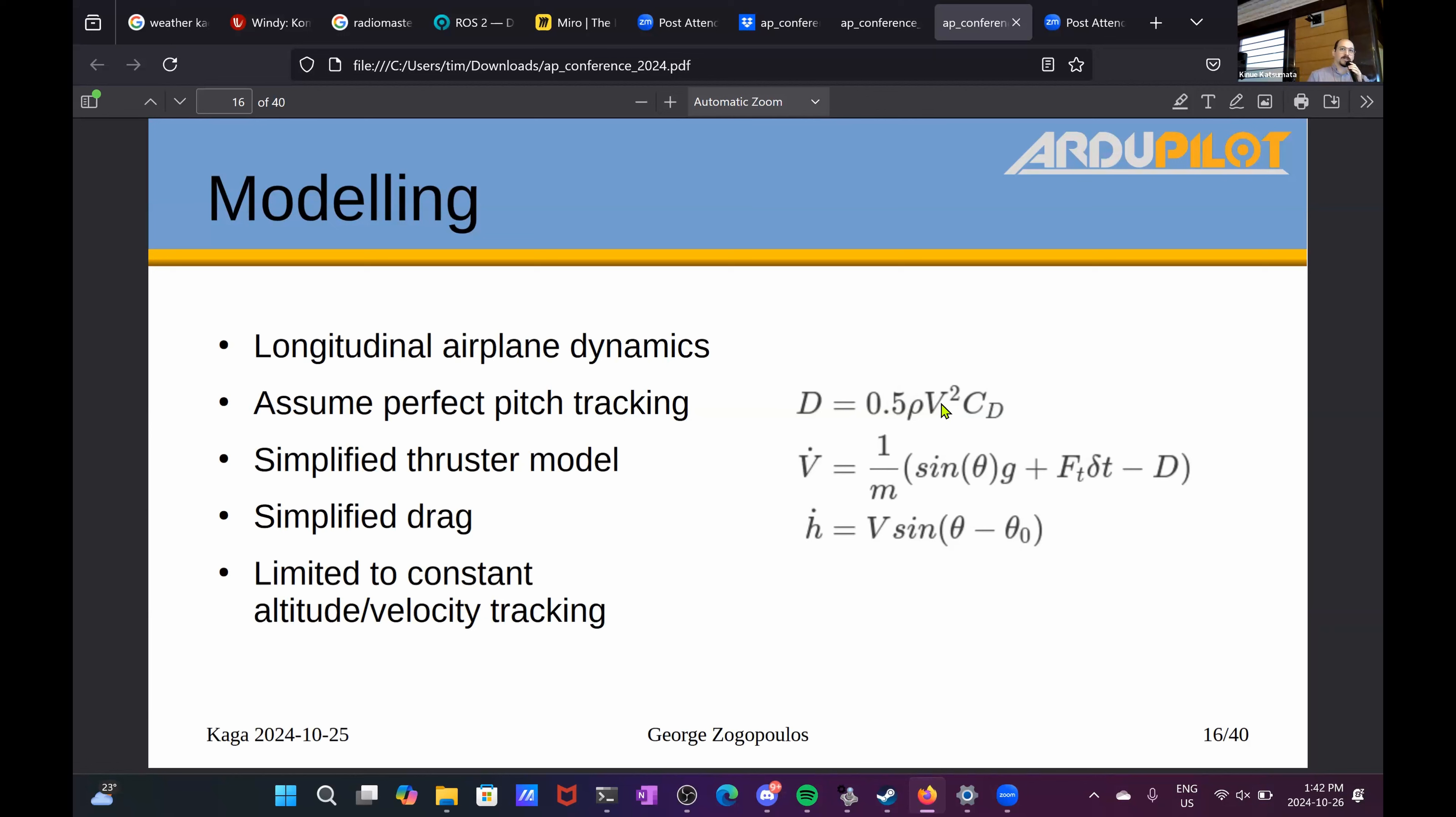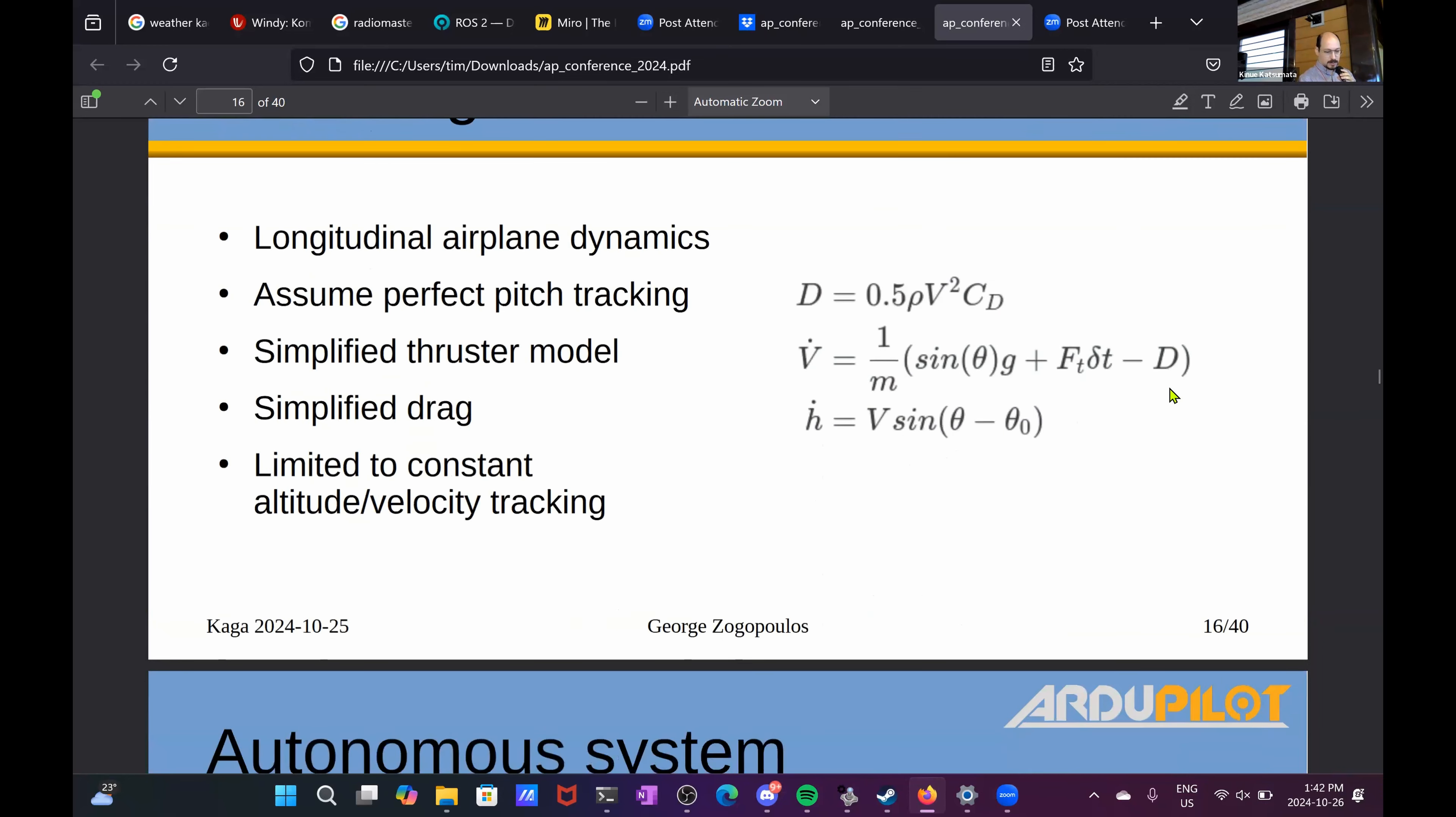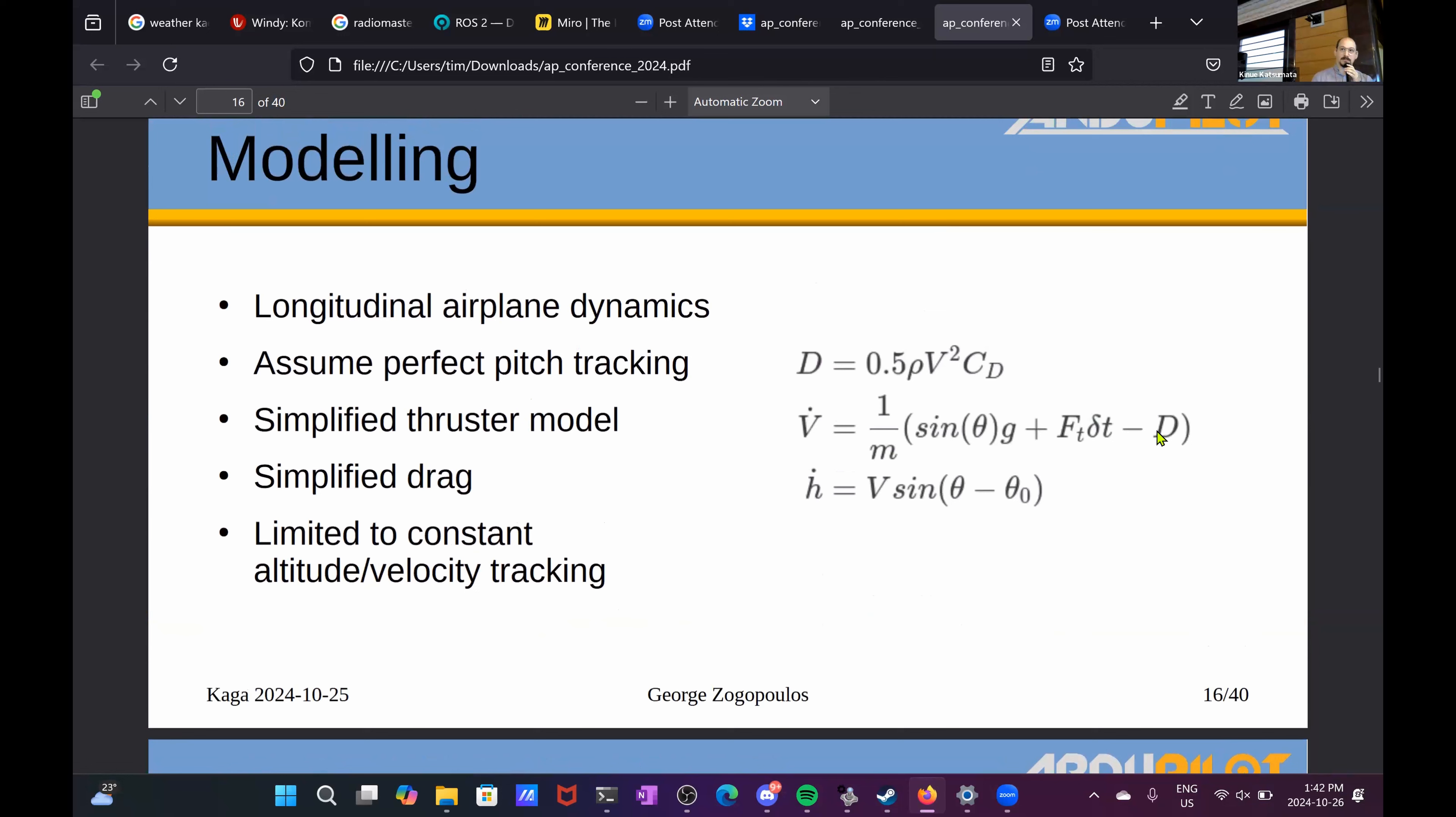And a drag model that is not the simplest one, it's just complicated to be useful perhaps. We could do simpler, we could do more complicated, it's midway there. And we are going to limit ourselves to a regulation problem. Basically, how do you take a constant altitude and speed reference set point and try to track that? We're not going to go through climbs and dives and these kinds of transitions.